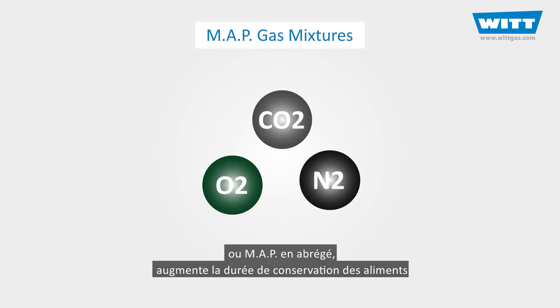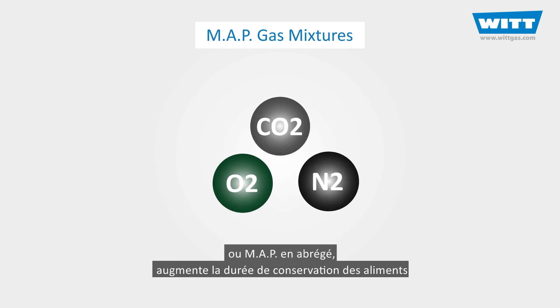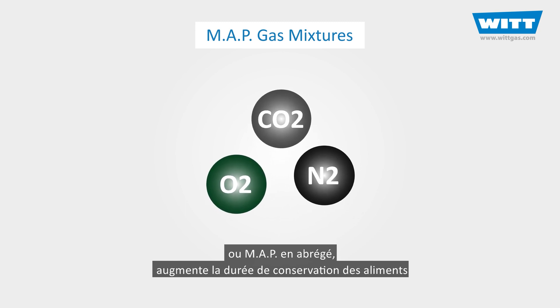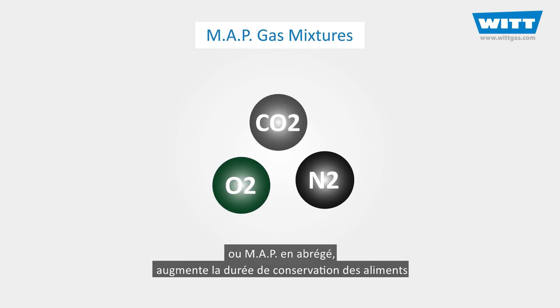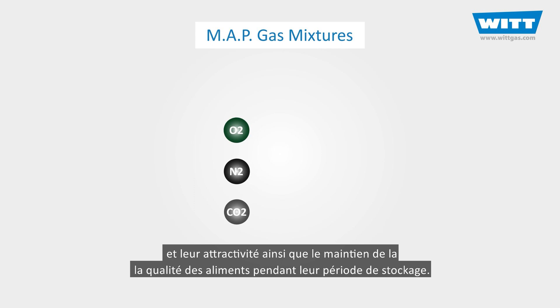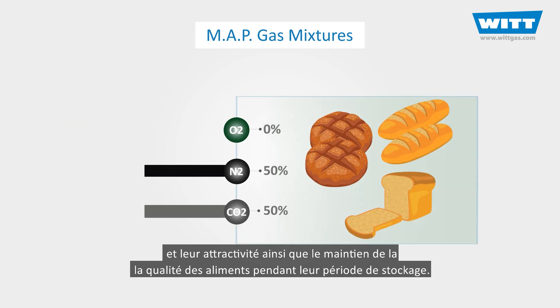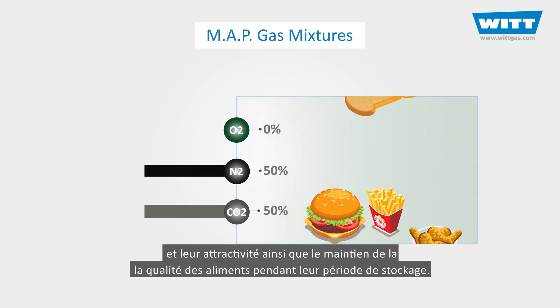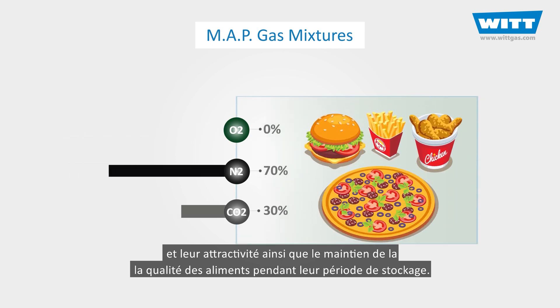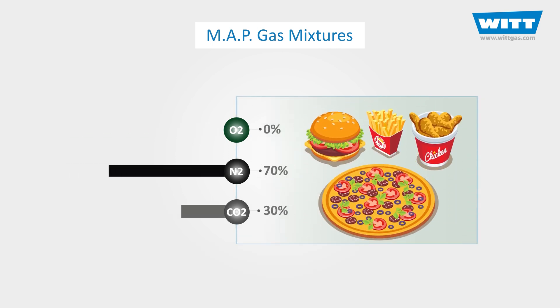Modified Atmosphere Packaging, or MAP for short, increases a food's shelf life and saleability, as well as maintaining the food quality during its storage period.